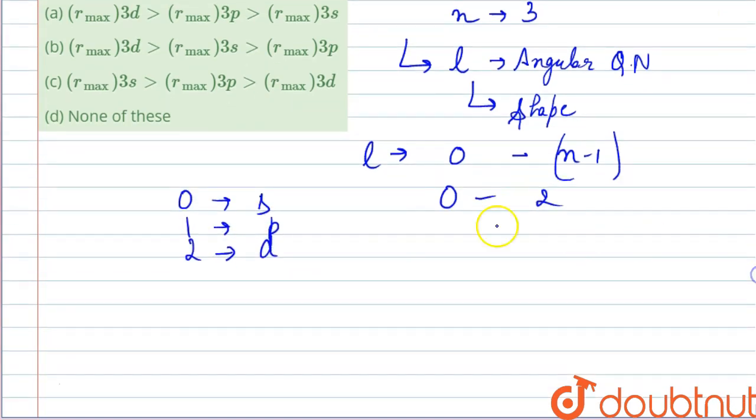Now we know that in the orbitals, not all the space is occupied by the electron. So there are some places where the probability of finding electron is maximum.